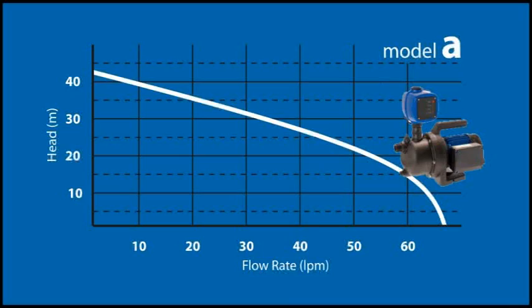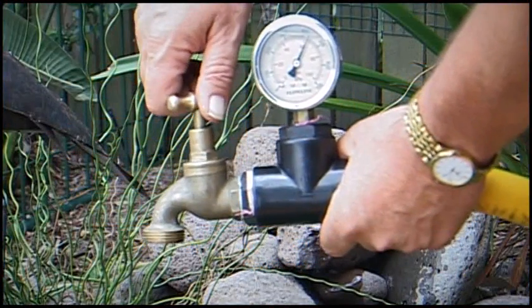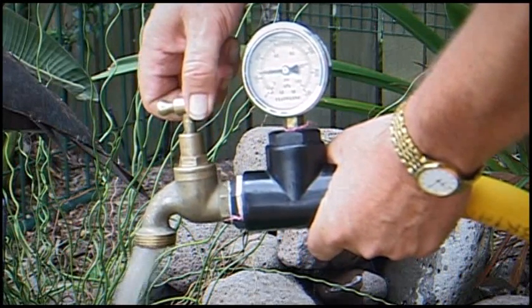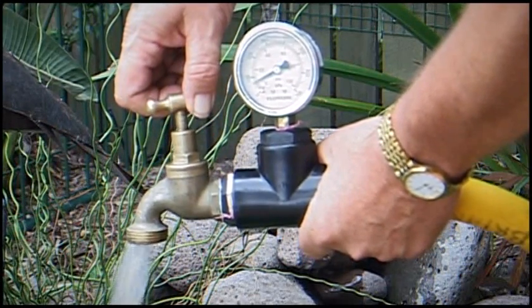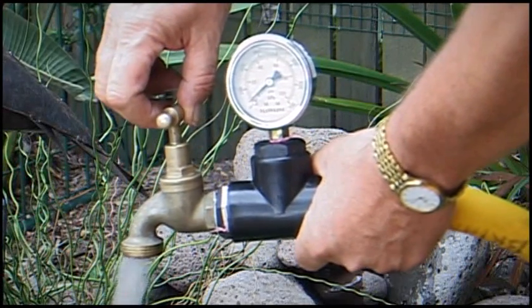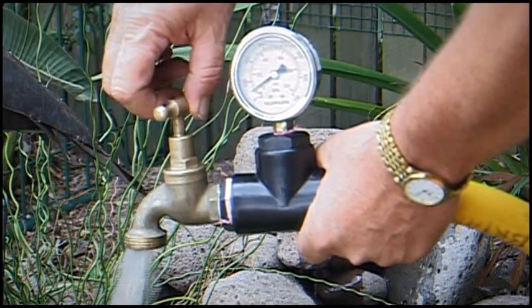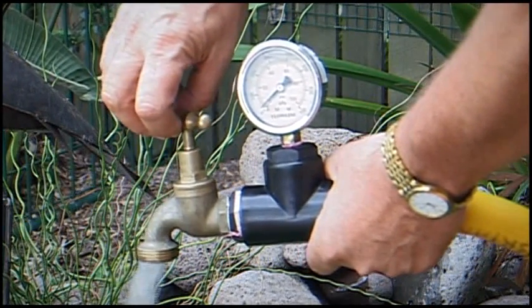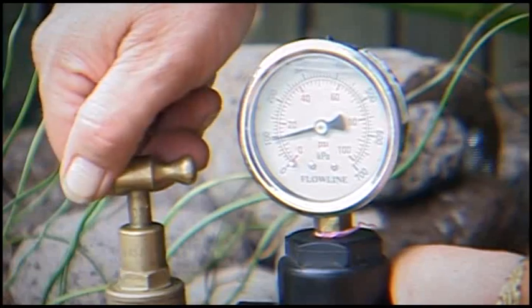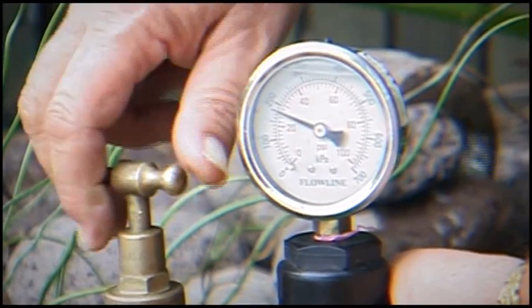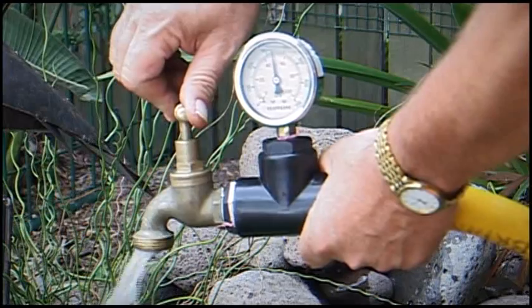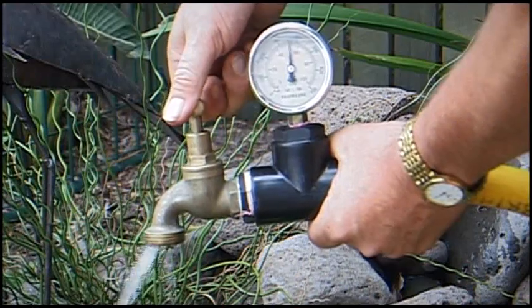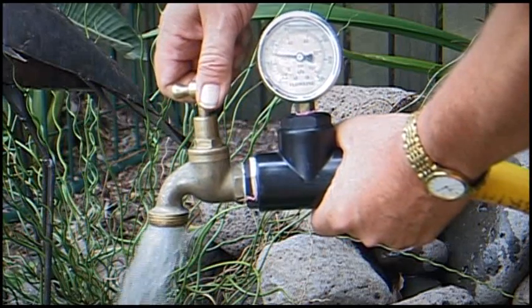As you can see, pressure will always affect the flow. Another way we can show this is by putting a pressure gauge with a tap on a hose and connecting it to a pump. When we open the tap completely, the flow increases as the pump is not working against pressure. Watch what happens as we increase the pressure the pump has to work against by slowly closing the tap. The flow rate is reduced. Let's remove some of the pressure and watch as the flow rate increases.